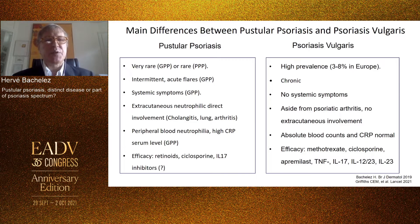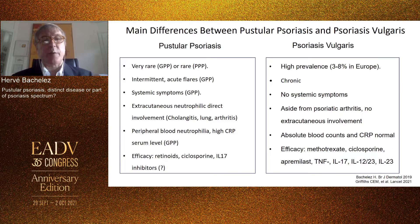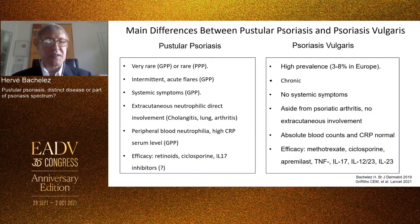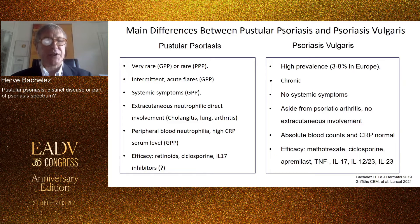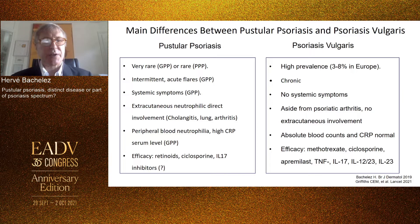The main differences between pustular psoriasis and psoriasis vulgaris are listed on this slide. Pustular psoriasis is very rare for GPP or rare for PPP, whereas it's highly prevalent for psoriasis vulgaris. The presence of intermittent acute flare is contrasted by the chronic course of psoriasis vulgaris. Systemic symptoms in GPP include the possibility of extra-cutaneous neutrophilic involvement of liver, biliary ducts, and lung — not seen in psoriasis vulgaris. Peripheral blood neutrophilia and high CRP serum levels are also not seen in psoriasis vulgaris.